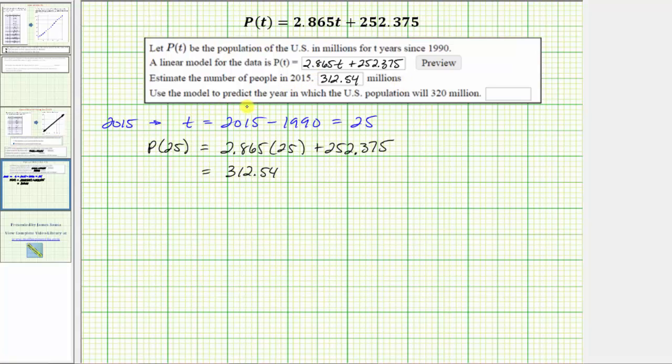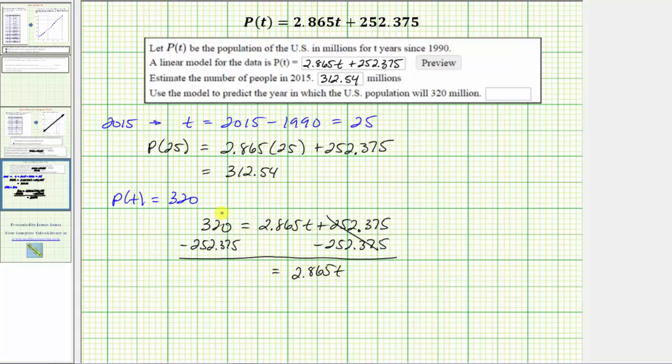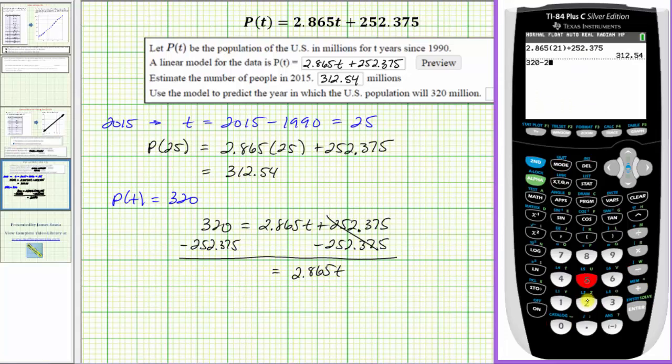For our last question, we're asked to use the model to predict the year in which the U.S. population will reach 320 million. For this question, we're given that P(T) equals 320. So we first need to determine the value of T, which would give us the number of years since 1990, and then determine what year that would be. If we substitute 320 for P(T), we'd have the equation 320 = 2.865T + 252.375. To solve this linear equation, we first isolate the T term by subtracting 252.375 on both sides, giving us 2.865T = 67.625.